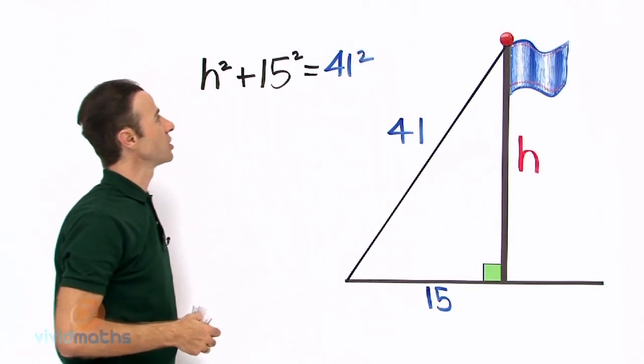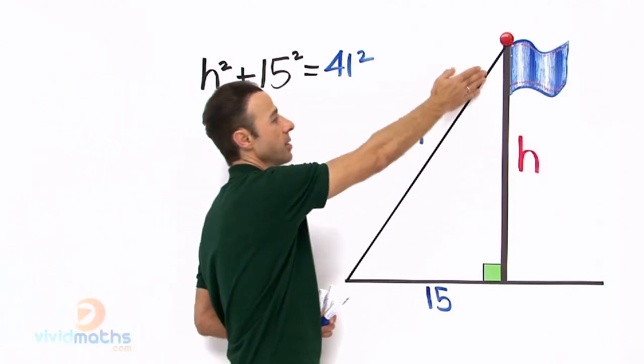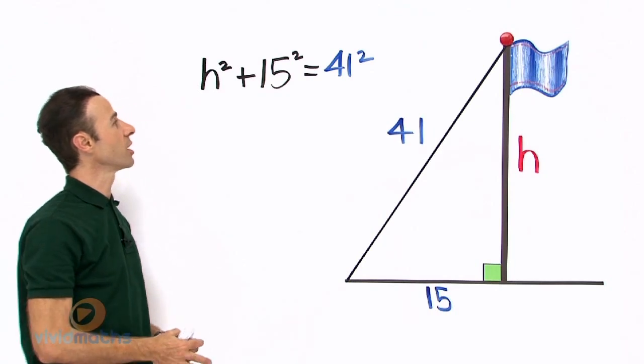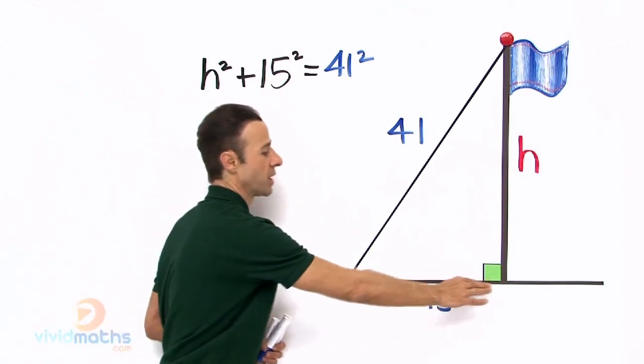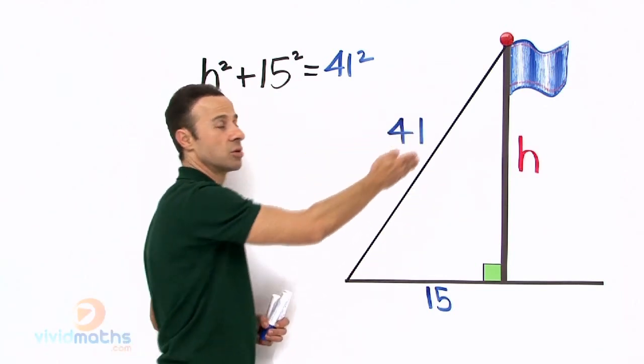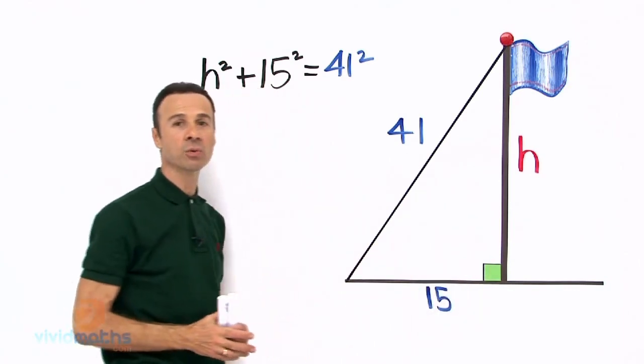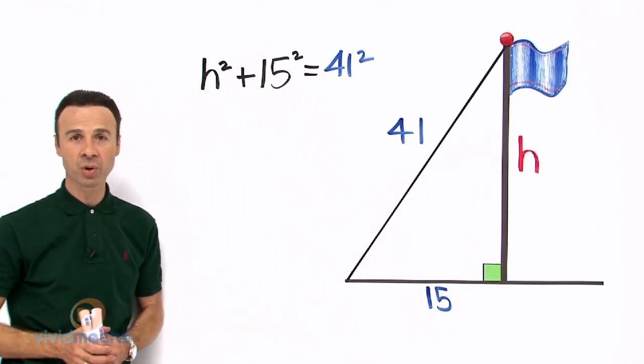Okay, let us check by pointing. We have the height H right there, there is the height. We also have the 15, that is the base down here, that is 15 squared. And that equals the hypotenuse, that is the hypotenuse there. We know that it is the hypotenuse because it is not attached to the right angle down there at the base of the flag pole.